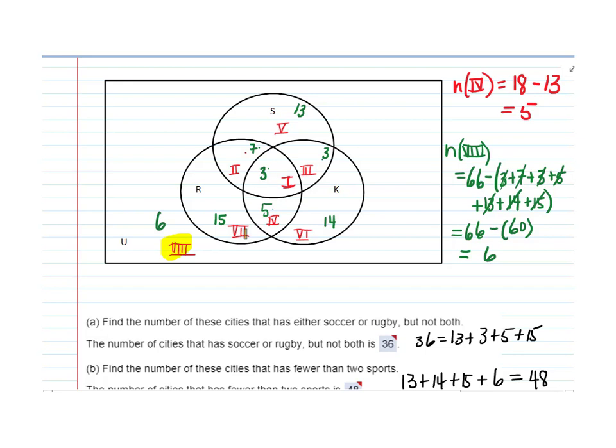We know that region 7, 6, and 5 all have one sport. Region 3, or sorry, region 1, which has 3 cities in it, that has 3 sports. Regions 2, 3, and 4 have exactly two sports. So we're not going to look in those.